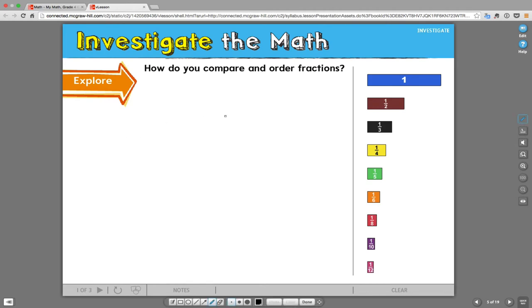Our focus or essential question for this chapter is how can different fractions name the same amount? How can you compare and order fractions? Basically, what we're trying to find out is when we look at two different fractions, how can we compare them?